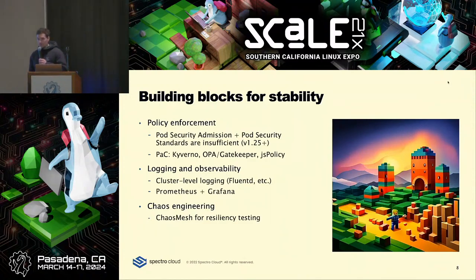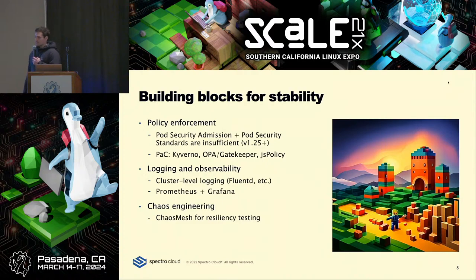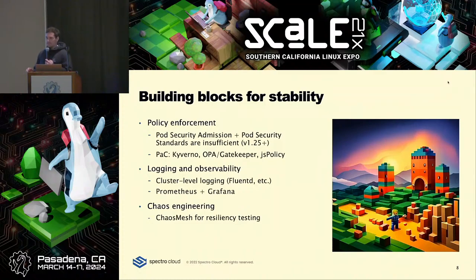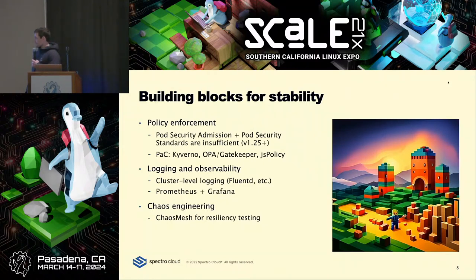Policy enforcement is another big area. As of Kubernetes version 1.25, they deprecated pod security policies in lieu of pod security admission and pod security standards — but those are woefully insufficient for advanced use cases. There are three buckets: baseline, privileged, and restricted. Many enterprises end up disabling this completely and going with a policy-as-code solution like Kyverno, OPA, or JS Policy.